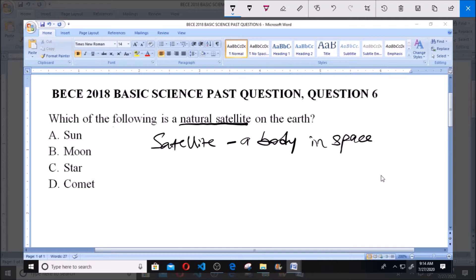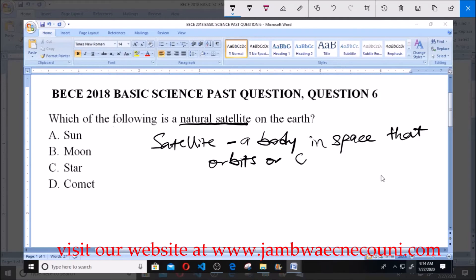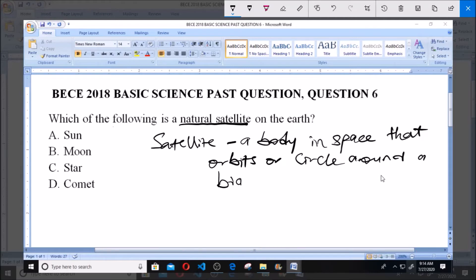It's a body in space that orbits or circles around a bigger body in space. So this is just the simple definition of a satellite.